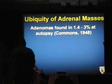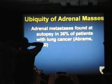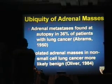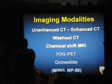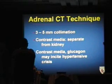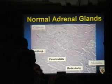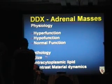Now, adrenal masses. The problem is that they're ubiquitous and adenomas and mets look similar — both are common. Adrenal mets are found commonly in patients with lung cancer, but isolated adrenal masses in known lung cancer are more likely benign. CT techniques are relatively simple: use 3–5 mm collimation. We rarely use contrast media unless you're not sure it's adrenal or renal. The differential diagnosis can be based on physiologic and pathologic criteria — size, whether there's lipid within cells, and contrast material dynamics.